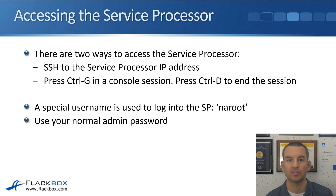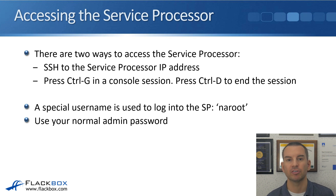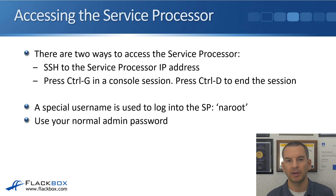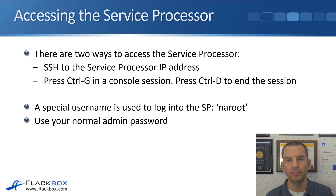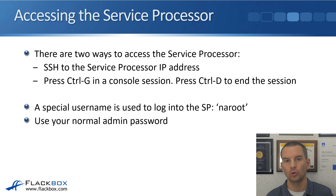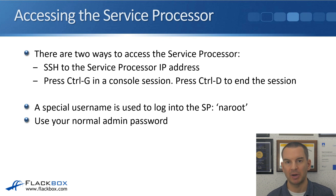Once you've done that, you'll be able to access the service processor in two ways. You can SSH to that service processor IP address, or when connected over the console — because the service processor is connected to that as well — you can press CTRL-G, which takes you to the service processor command prompt. CTRL-D will get you back out again. To log in, a special username is used: na-root, which uses your normal admin password by default.